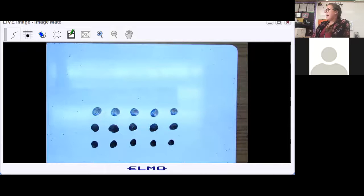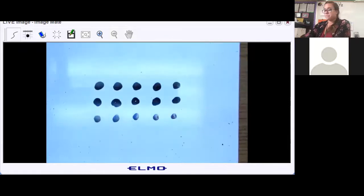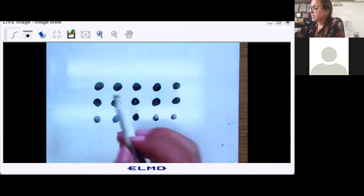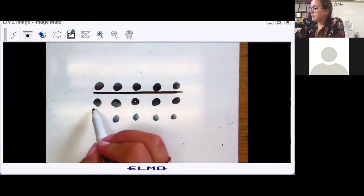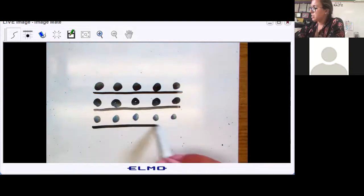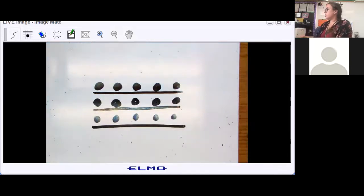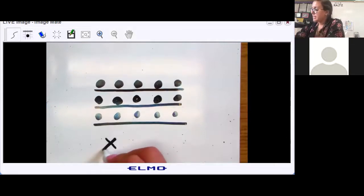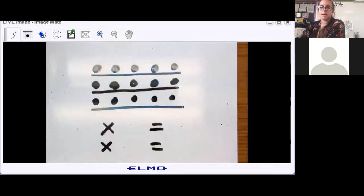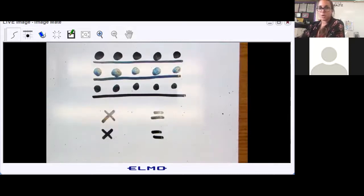All right, how many groups of five do you see in this array? The correct answer is three groups of five - one, two, three. Go ahead and pause the video and write down two multiplication sentences that match this array.